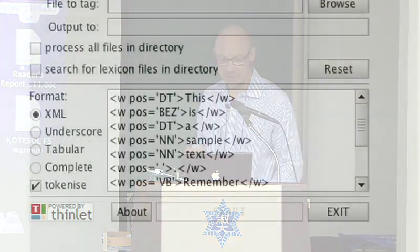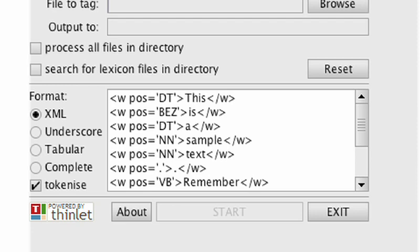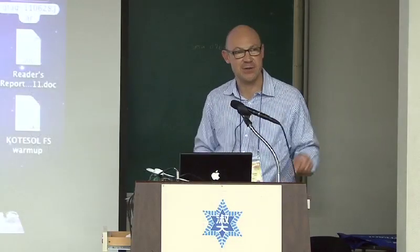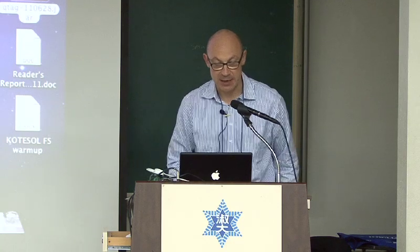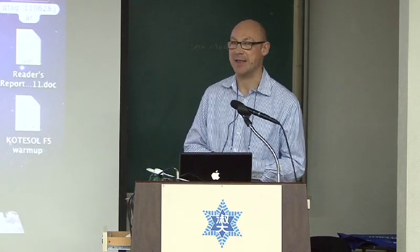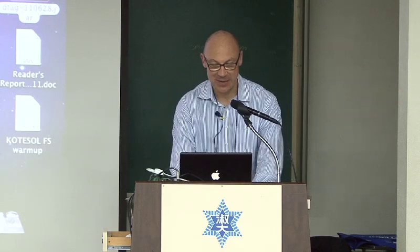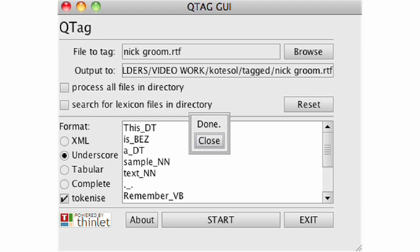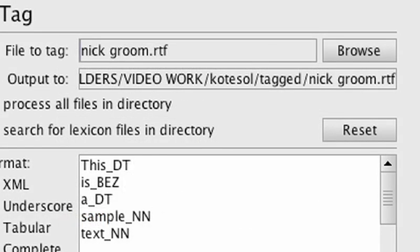You can see in the window underneath it gives you various options — different tagging styles. There's XML, which is becoming increasingly the standard language encoding format globally. There's underscore format, where you have an underscore and then the tag. There's also tabular format, and a 'complete' option that's really for geeks only. Let's just do the simple underscore one and start tagging. Oh, it's done already — that didn't take long. And notice it's conveniently put our file in a separate folder called 'tagged.' Why is that a good idea?